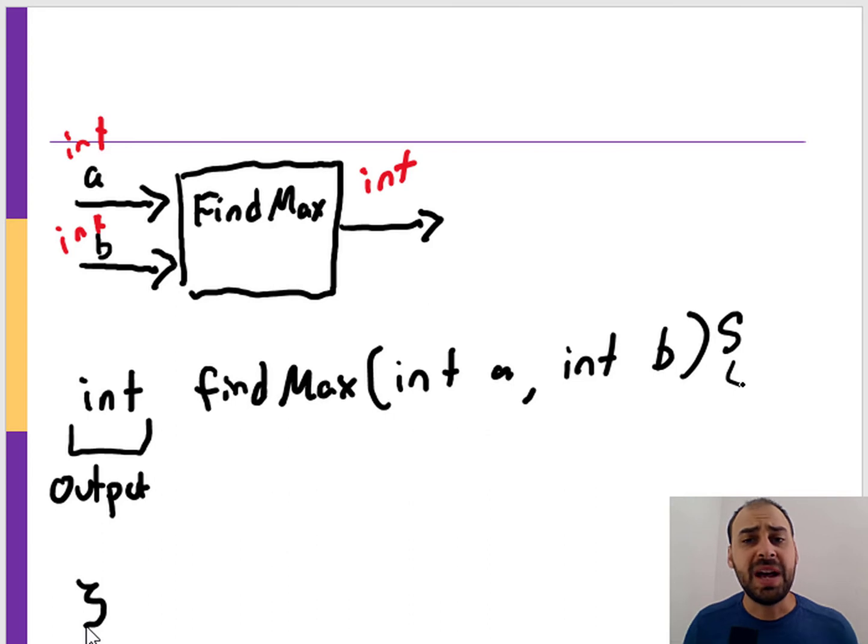That's really the first step with any function - determine what are the inputs, what are the outputs, and what's a meaningful name. You tend to want functions to be designed to do one clear task, and if a task has multiple parts, you tend to want to break those up into smaller functions.